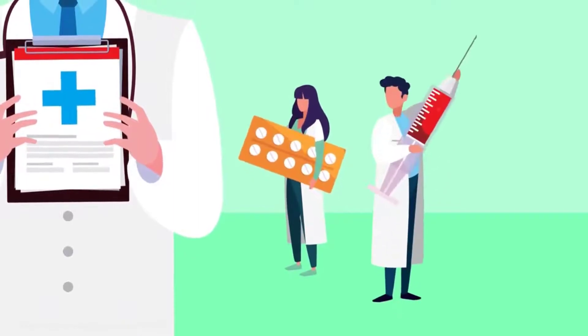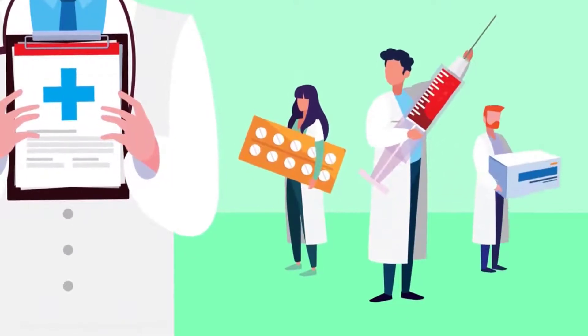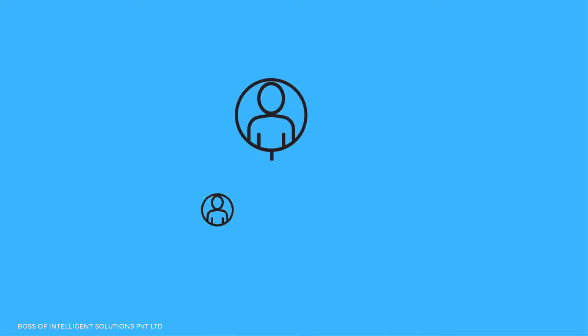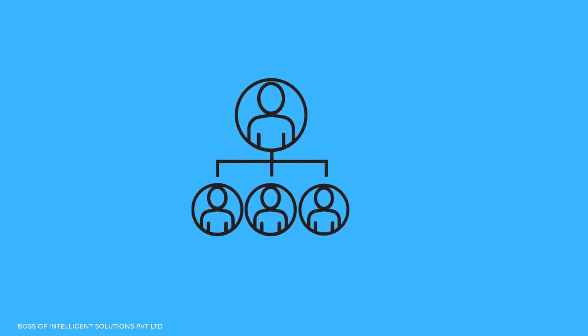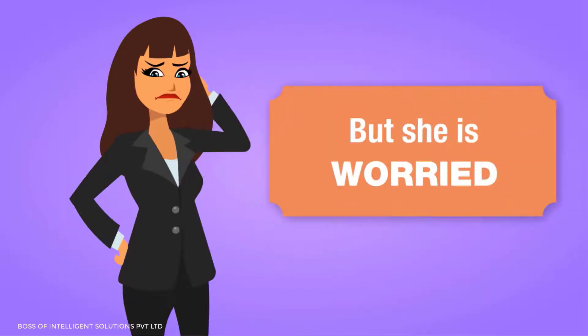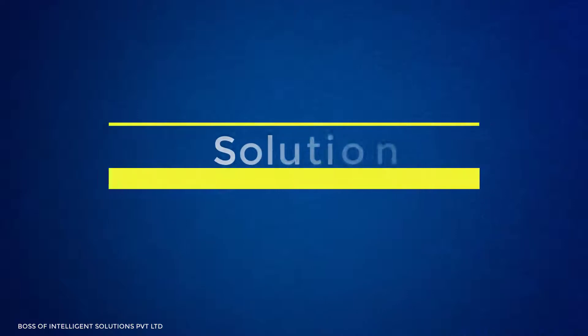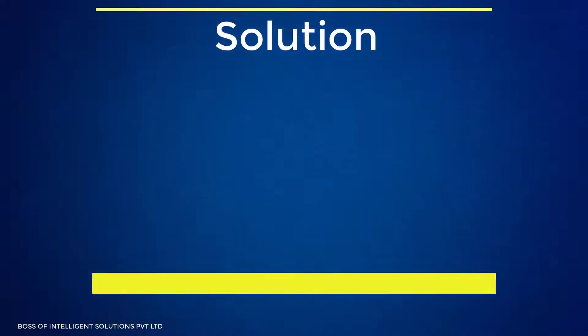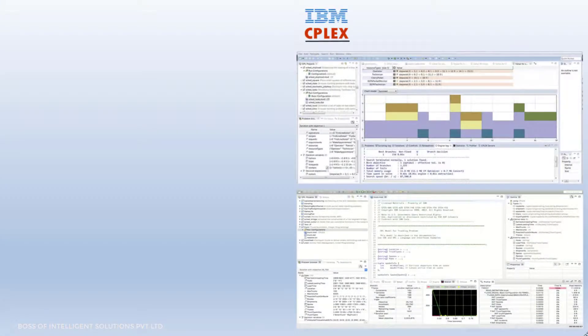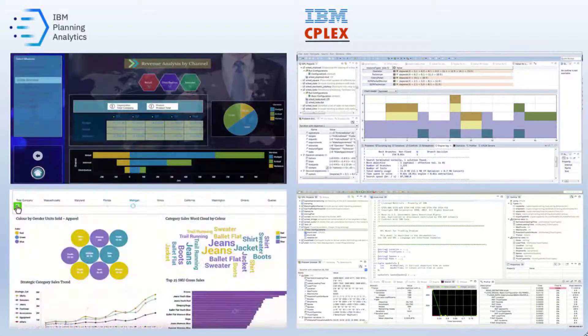It is only with a lot of skill and experience that it is possible for Jane to create a schedule, which is strenuous for a human brain to do manually. Here is the solution for staff scheduling optimization, powered by IBM iLog CPLEX and IBM Planning Analytics.